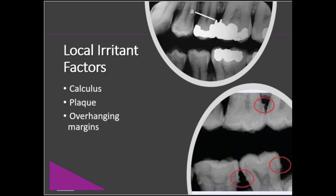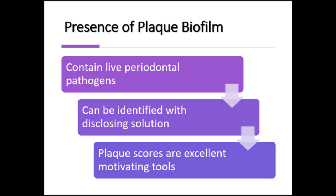Another thing we have to consider is any dental restoration harboring biofilm, such as an overhanging margin or a poor crown margin. Sometimes restorations must be redone in order to preserve the remaining periodontal structure or to prevent recurrent infection. As discussed before, presence of plaque biofilm means there is a bacterial or other type of organism infection in the mouth. We can identify biofilm using disclosing solution — the red dye inside is picked up by the plaque biofilm, making it more easily visible.